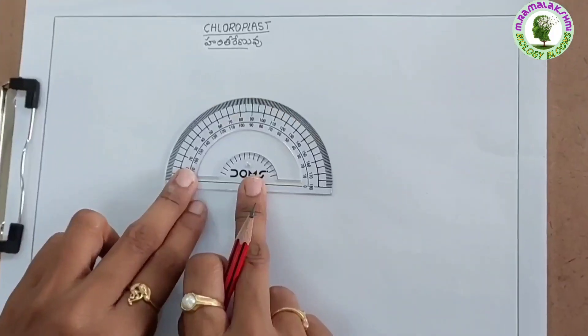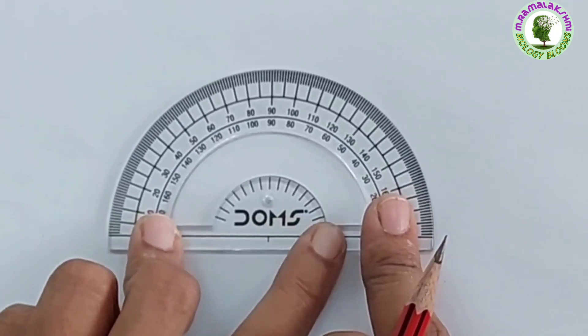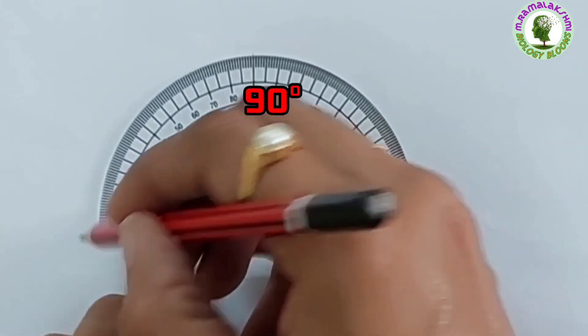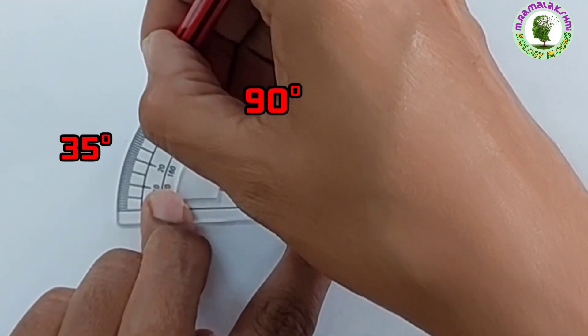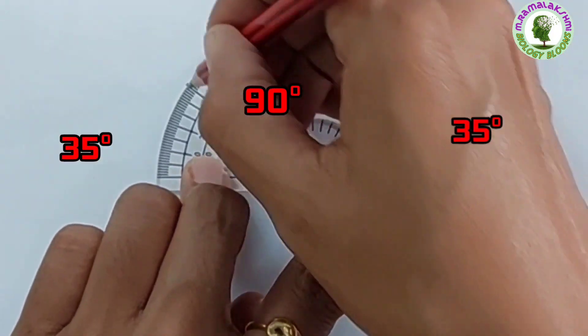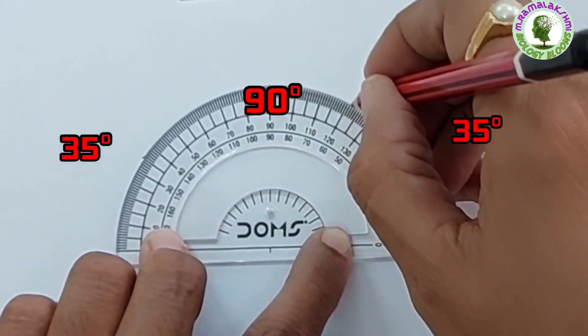Children, take the protractor and keep it like this. Put dots at 90 degrees, 35 degrees from this side and 35 degrees from this side. Now, join the dots like this.